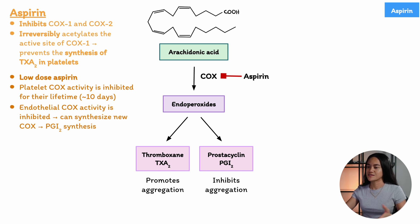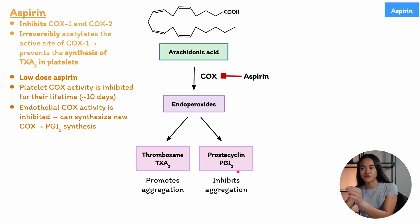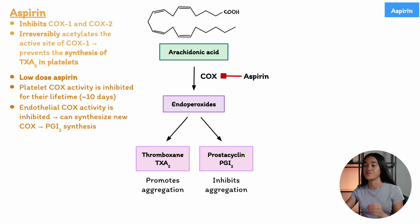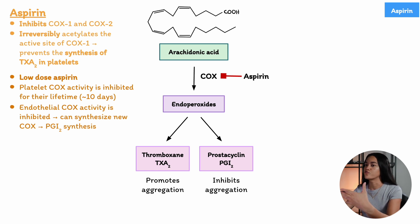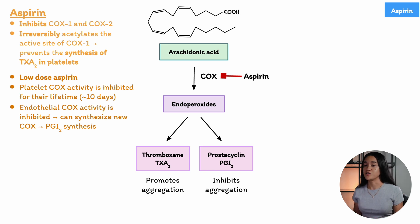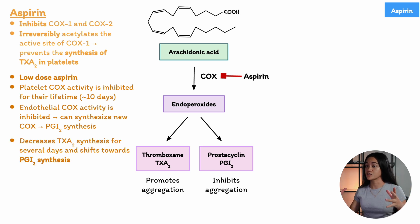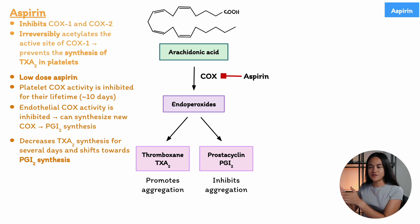If cyclooxygenase produces both thromboxane that stimulates platelet activation and prostacyclin that inhibits platelet activation, how is it that inhibiting cyclooxygenase has this antiplatelet effect? The reason is because of where the cyclooxygenase is located and where the thromboxane and prostacyclin are being produced. When aspirin is administered, it inhibits cyclooxygenase in both platelets and endothelial cells. The difference is that endothelial cells are normal, fully functioning cells with a nucleus, capable of synthesizing new cyclooxygenase. However, platelets can't generate new cyclooxygenase. So over time with a low dose of aspirin, you will eventually get almost complete inhibition of cyclooxygenase in the platelets, meaning you can't produce thromboxane, shifting the balance towards inhibiting platelet aggregation and preventing clot formation.